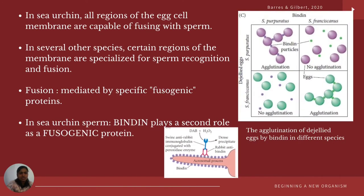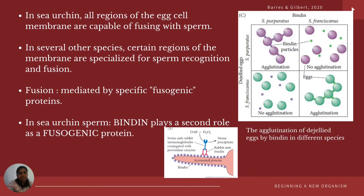In sea urchins, all regions of the egg cell membrane are capable of fusing with the sperm, but in several other species certain regions of the sperm are specialized for sperm recognition and fusion. This fusion is mediated by specific proteins called fusogenic proteins. In sea urchin sperm, bindin plays a second role as a fusogenic protein, as shown by the blue dots on the acrosomal process in the diagram, which also shows the agglutination of dejellated eggs by bindin in different species.